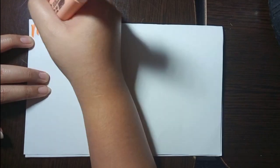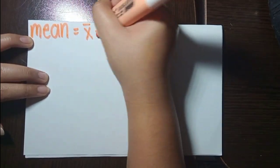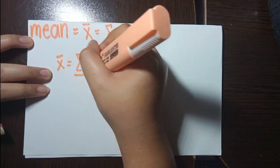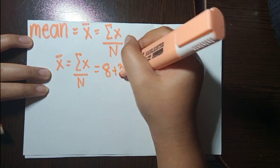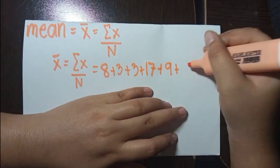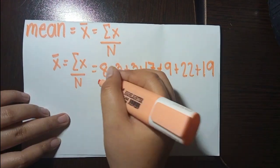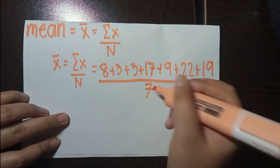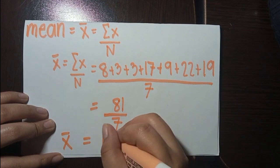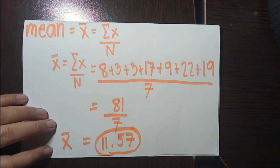This is the set of data for the second problem and we need to determine its mean, median, and mode. Let's determine the mean first. In determining the mean, we use the formula of summation of x over n — we add all the values over the number of values. So, 8 plus 3 plus 3 plus 3 plus 17 plus 9 plus 22 plus 19 divided by 7, giving us 81 over 7, which equals 11.57. Therefore, the mean of this set of data is 11.57.